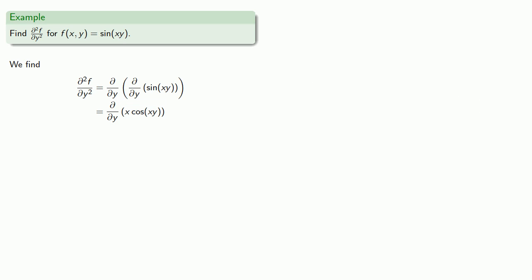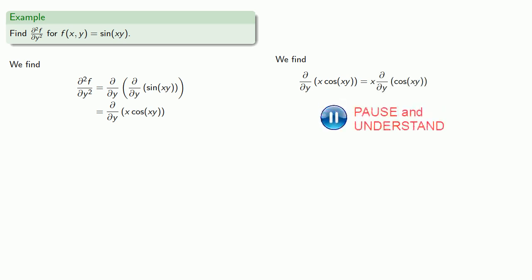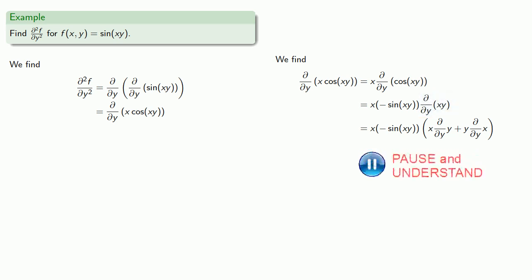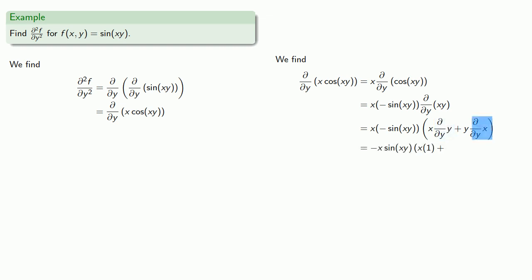Now we need the derivative of x times cosine of xy with respect to y. That's a product, but remember y is our variable and everything else is treated as a constant. So x is a constant, and the derivative of a constant times a function is the constant times the derivative of the function. The chain rule gives the derivative of cosine as minus sine, times the derivative of the inside. That's a product, so we apply the product rule: x times the derivative of y, plus y times the derivative of x. The derivative of y with respect to y is 1, and the derivative of x with respect to y is 0. Cleaning up the algebra gives our final answer.